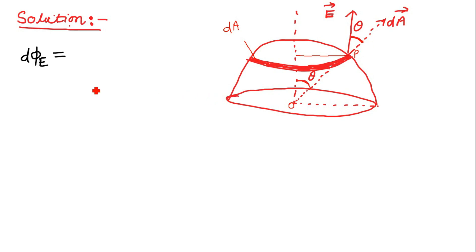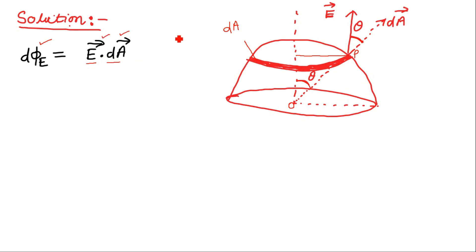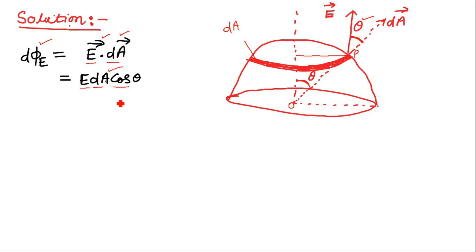Since the angle shown is θ, the angle between the electric field and the area vector at point P will also be θ. According to the definition of electric flux, the flux through small area element dA is given by E · dA, which simplifies to E dA cosθ. The value of dA is already given to us.